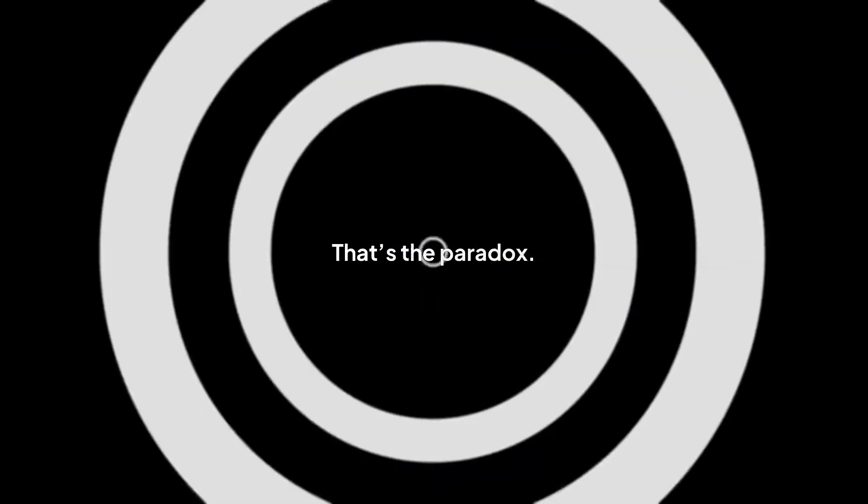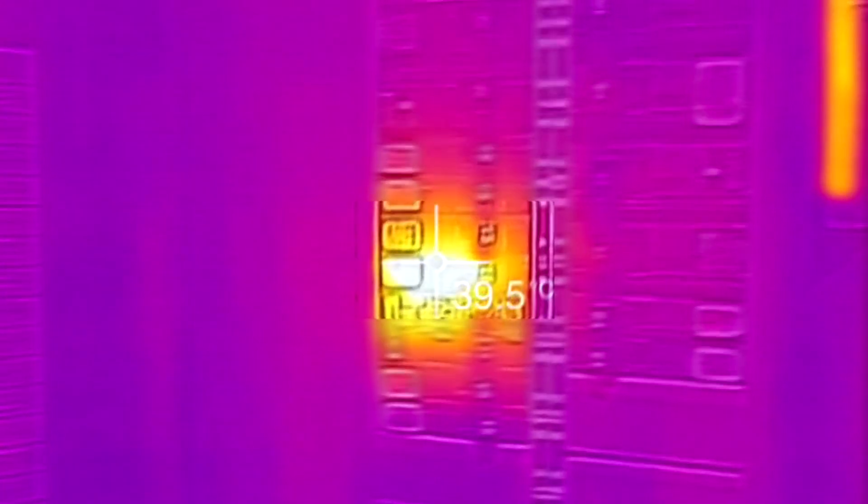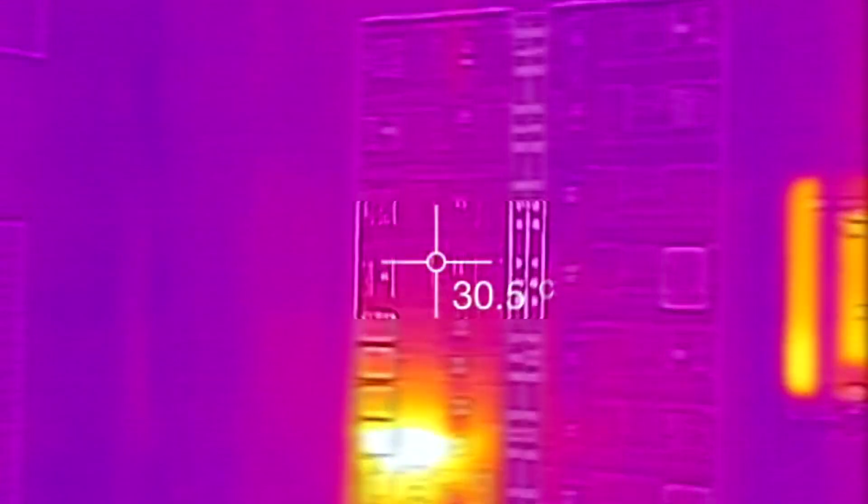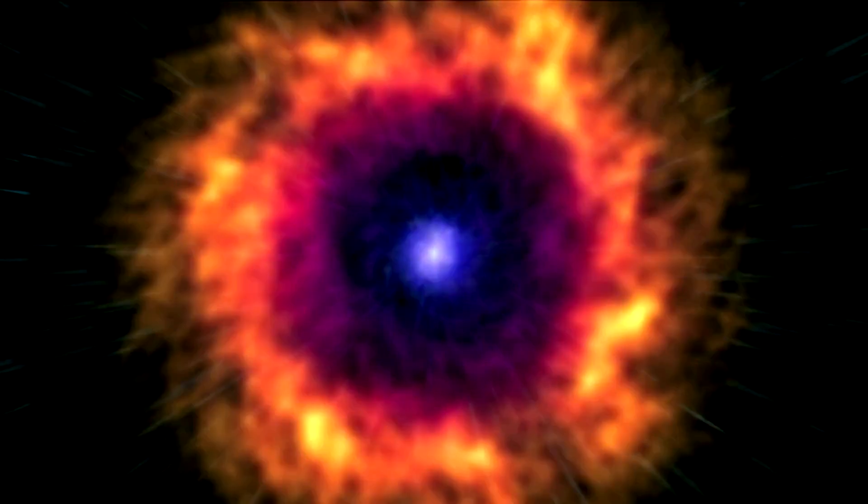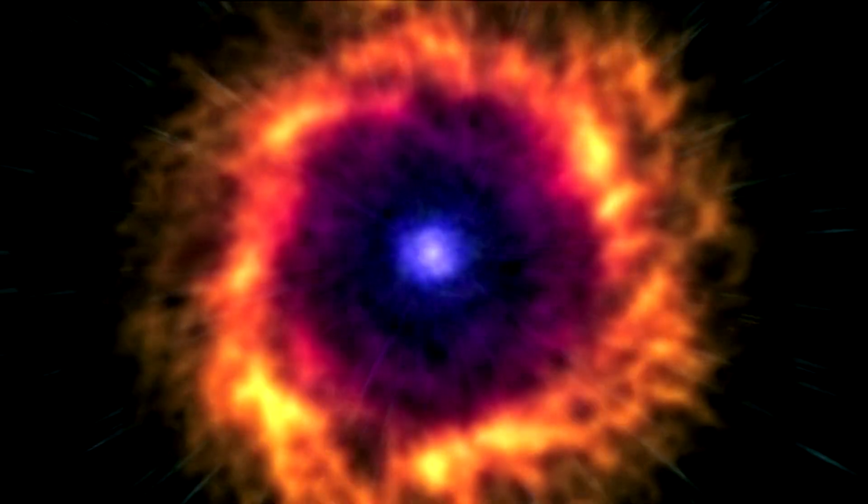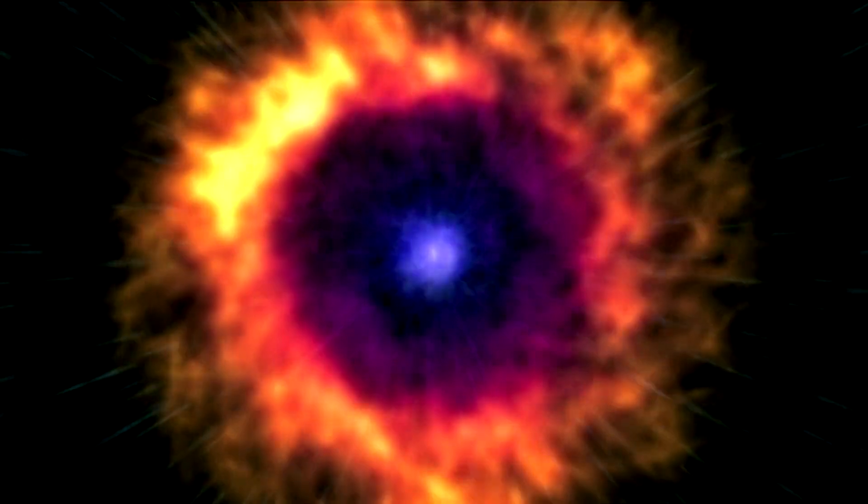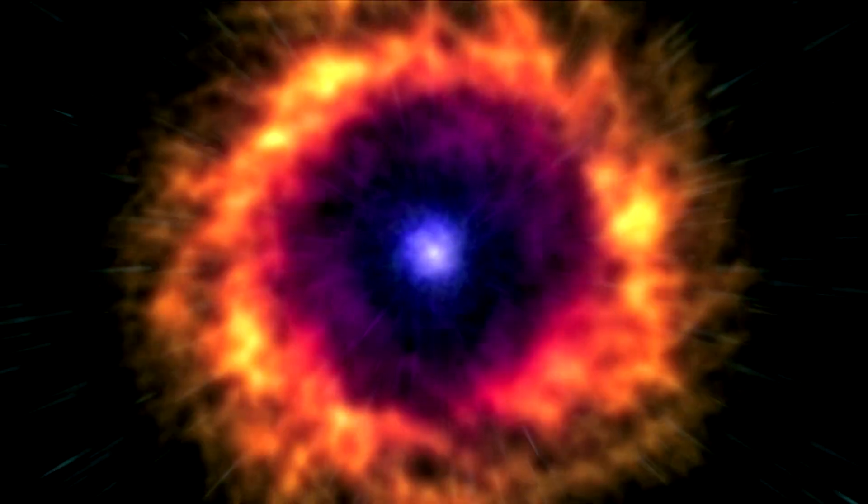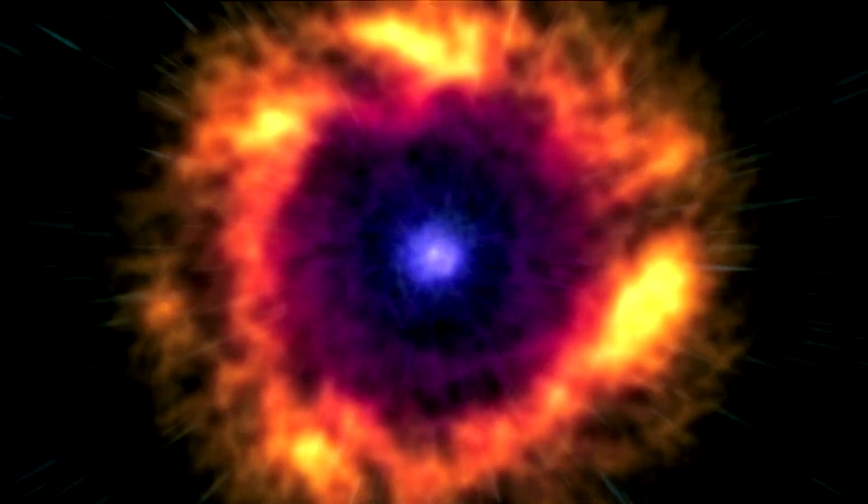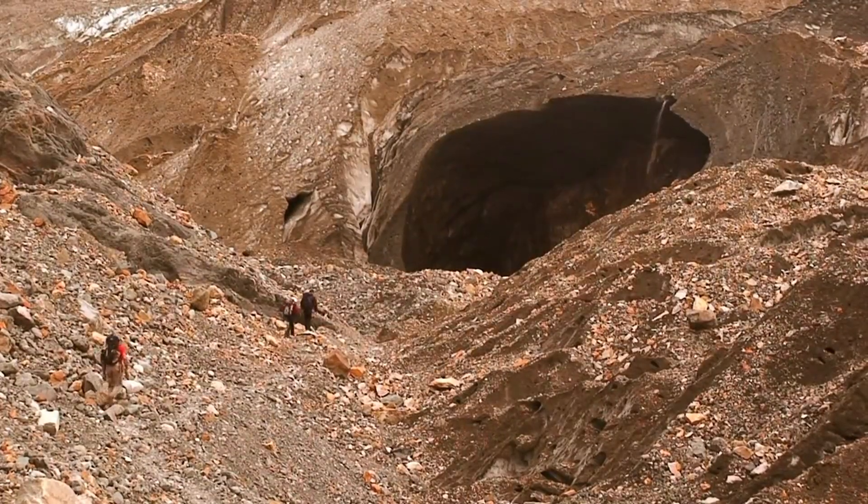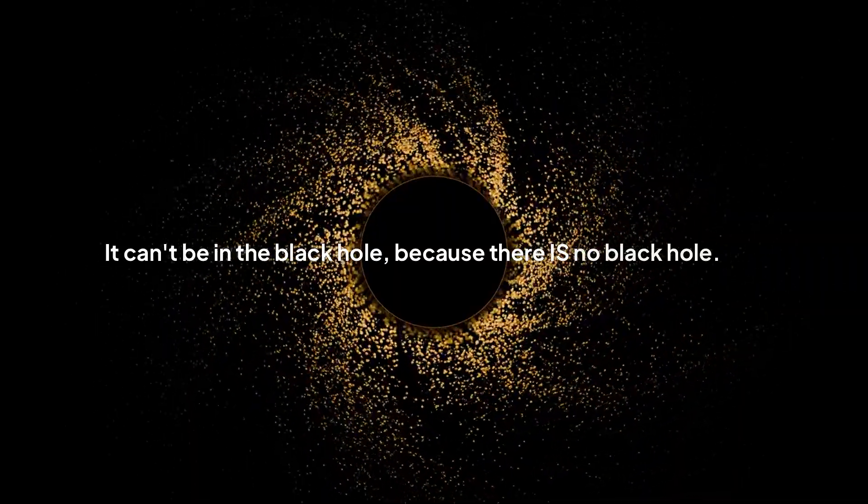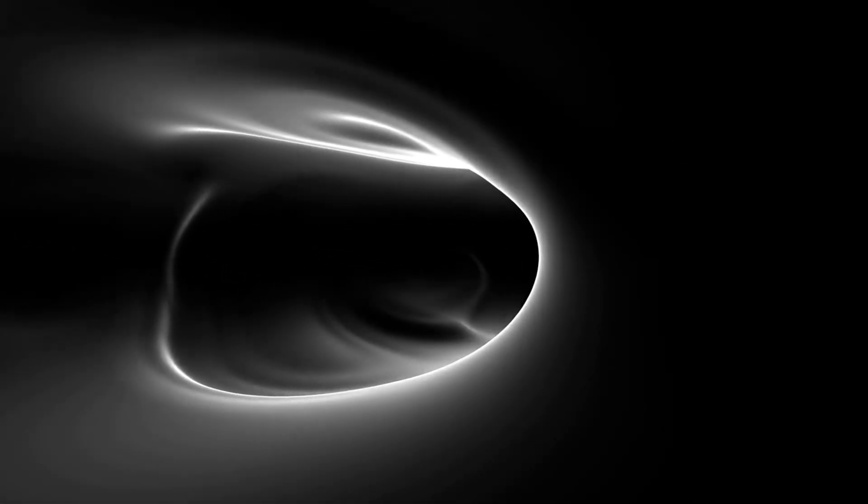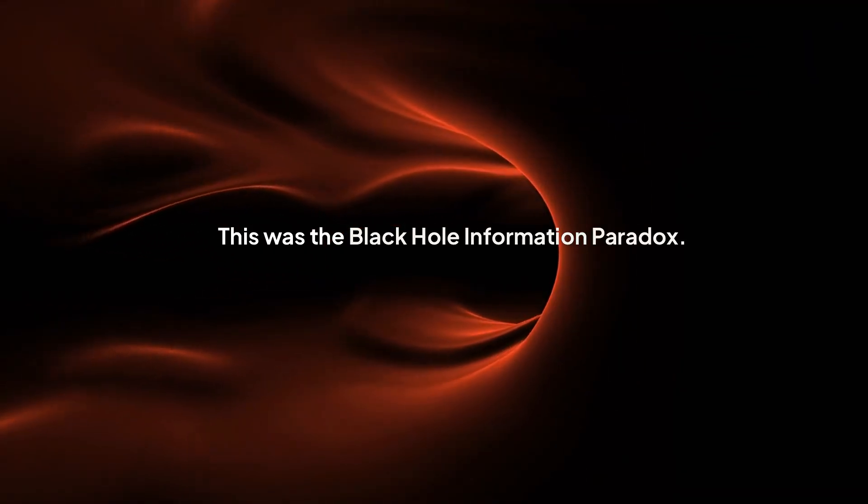And boom. That's the paradox. Hawking's math showed this radiation is thermal, which is a fancy way of saying it's totally random. Its properties only depend on the black hole's mass, spin, and charge. Not on the unique fingerprint of the apple, or the star, or the spaceship that fell in. So, when the black hole is gone, what happened to all the information it ate? It can't be in the black hole because there is no black hole. It can't be in the radiation because the radiation is random and carries no unique information. It looks like it was just deleted from reality. This was the black hole information paradox.